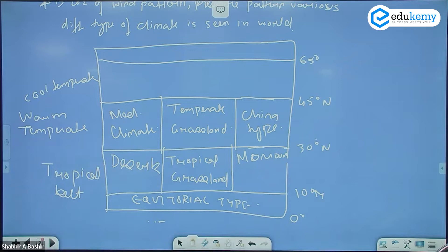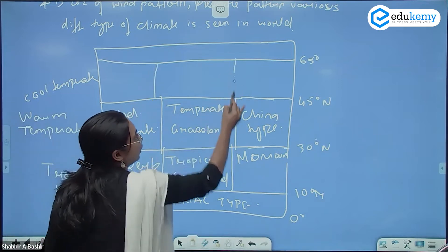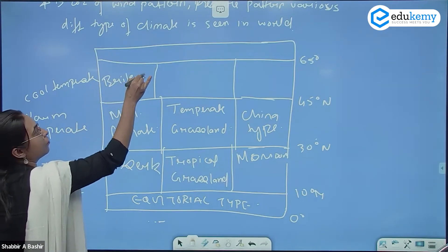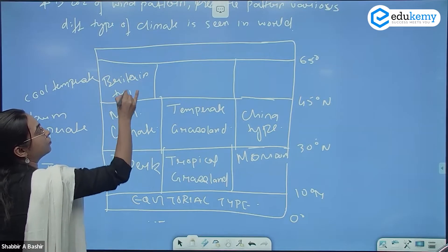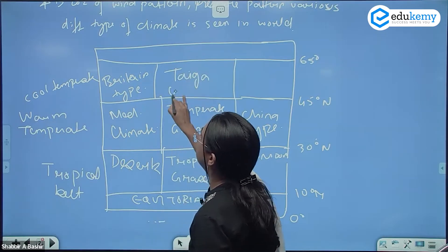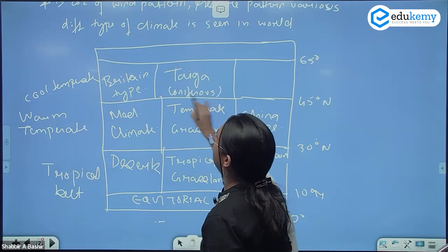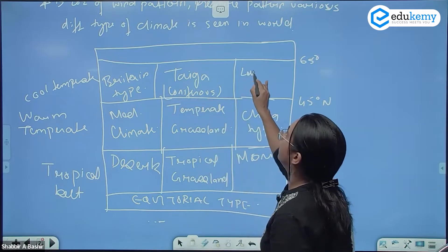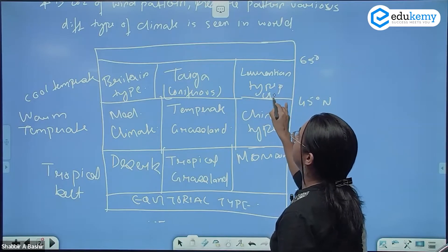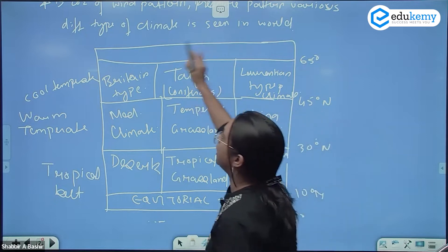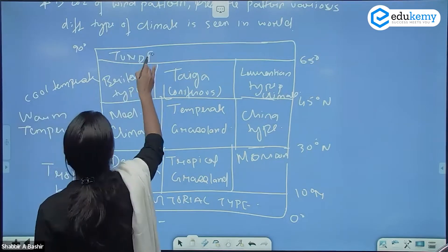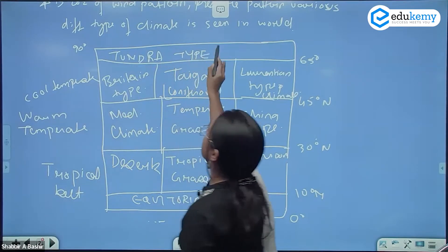From 45 to 65 degrees, I'm again dividing into three types: the Britain type of climate on the west, the Taiga or coniferous belt, and the Laurentian type of climate. Above 65 to 90 degrees, you have the tundra type of climate.